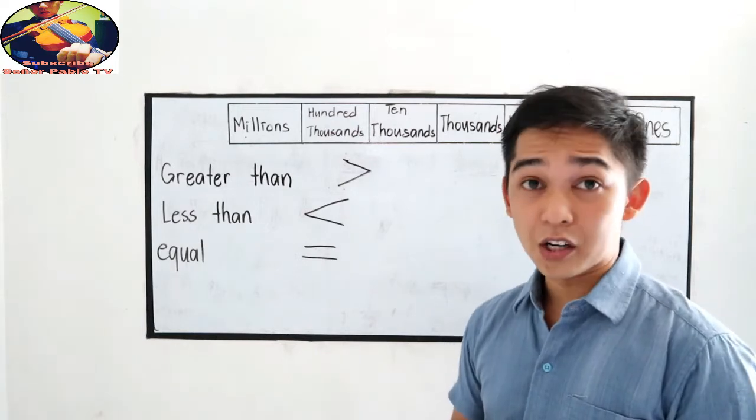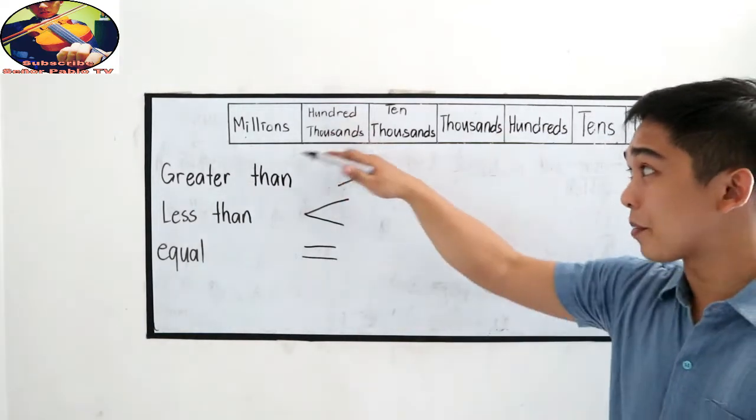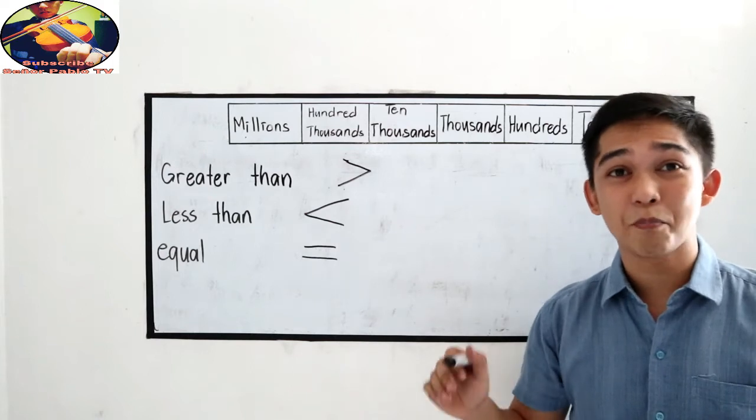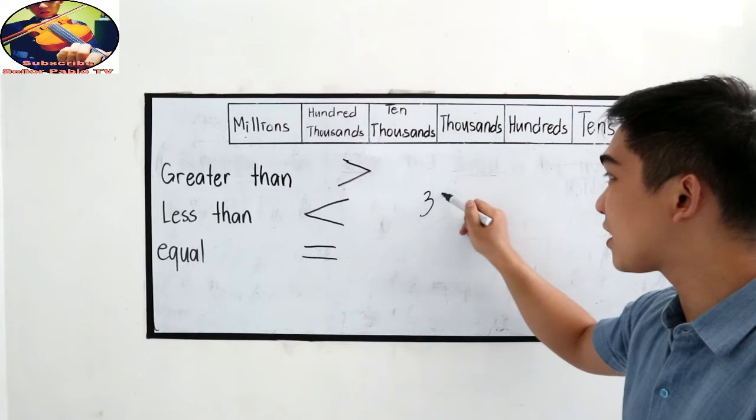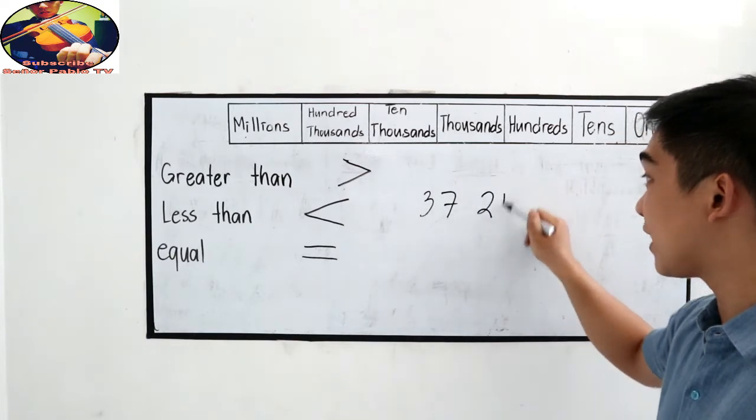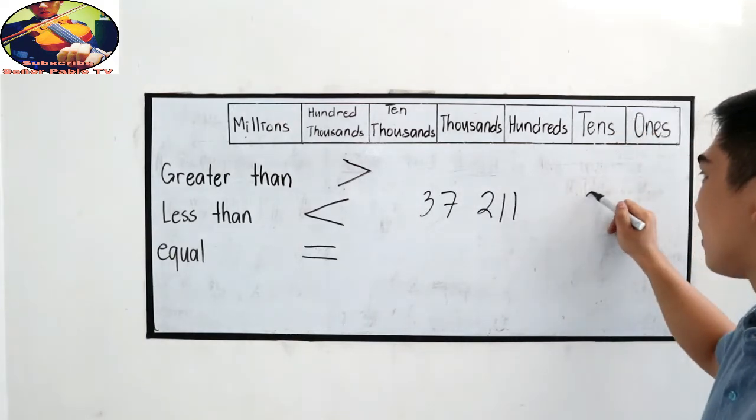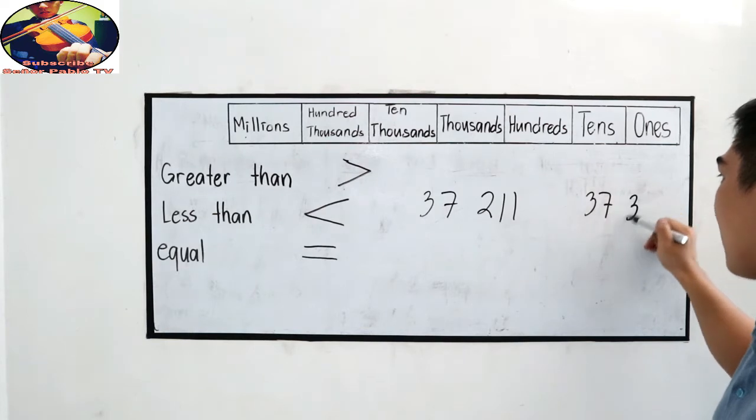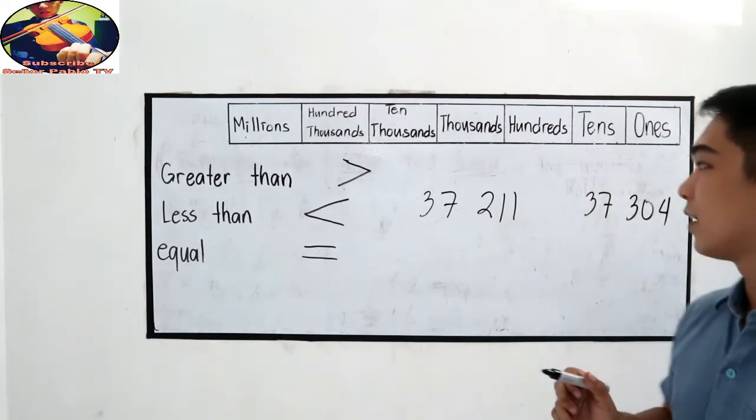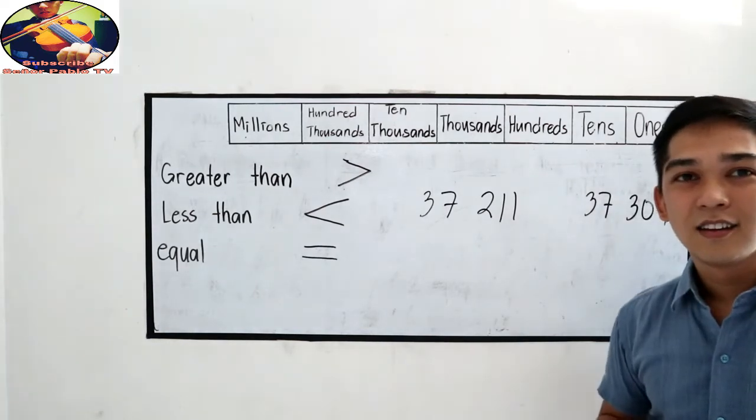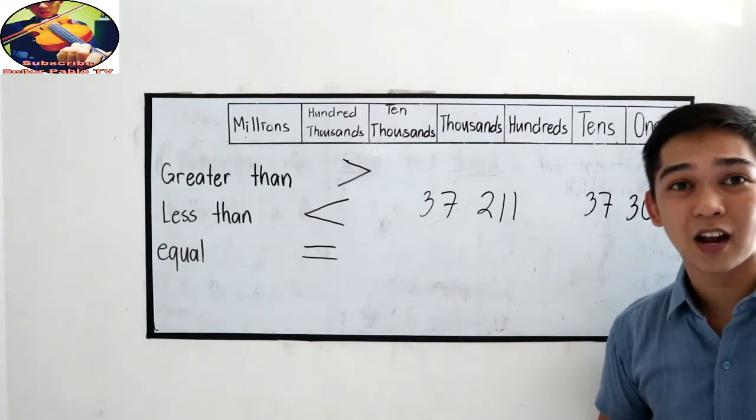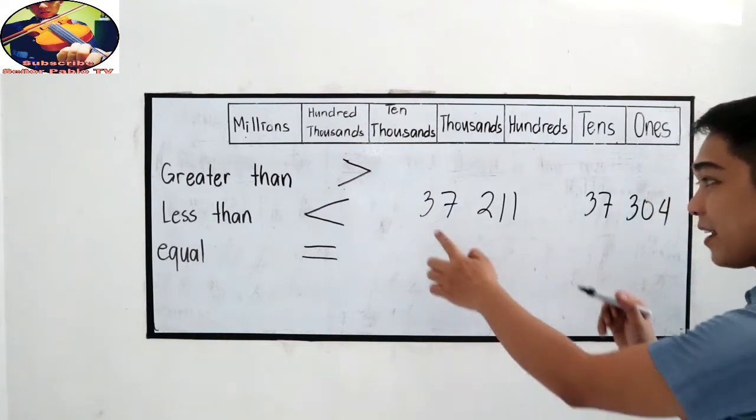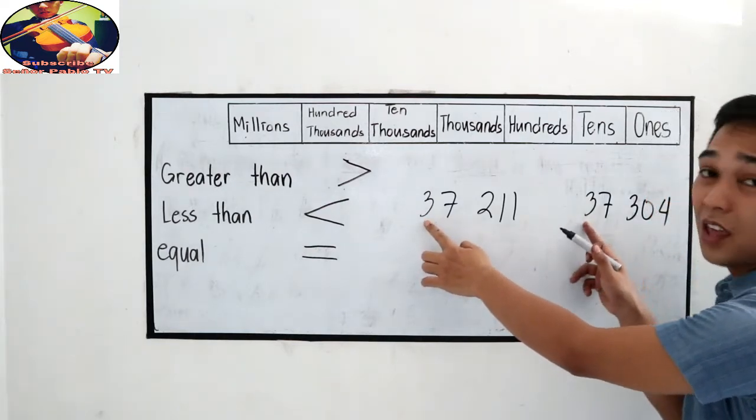We're going to use our place value in order to compare different numbers. Let's say we have 37,211 and 37,304. In comparing numbers, first we need to compare the highest place value. The highest place value is 3. They are equal.